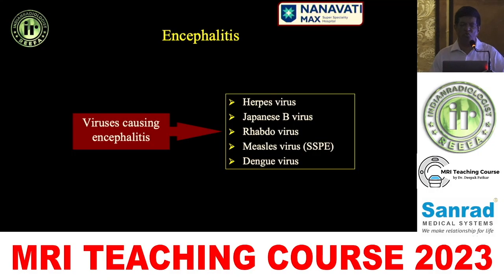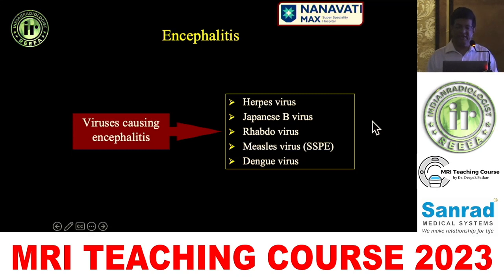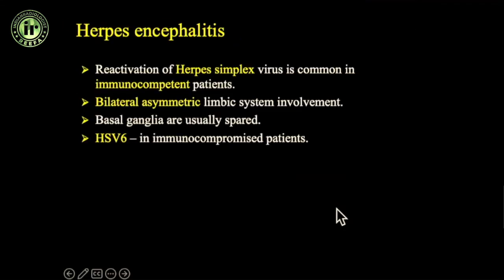Let's move on to viruses causing encephalitis. There are about 55 of them which can affect the CNS. The common ones are herpes, Japanese encephalitis (JE), rabies, measles, and dengue, and these are what we're going to cover.